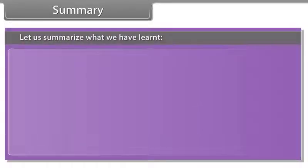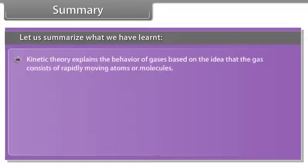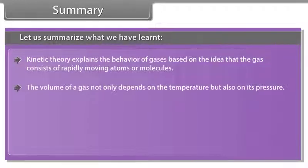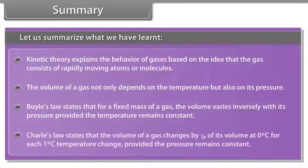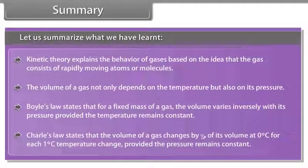Kinetic theory explains the behaviour of gases based on the idea that the gas consists of rapidly moving atoms and molecules. The volume of a gas not only depends on the temperature but also on its pressure. Boyle's law states that for a fixed mass of a gas, the volume varies inversely with its pressure provided the temperature remains constant. Charles law states that the volume of a gas changes by gamma P of its volume at zero degree centigrade for each one degree centigrade temperature change provided the pressure remains constant.